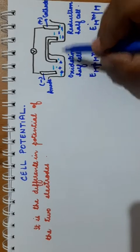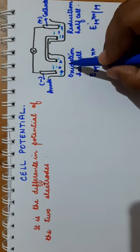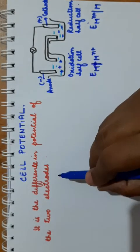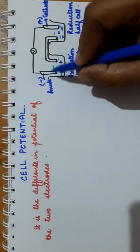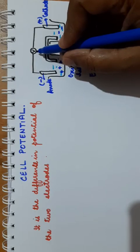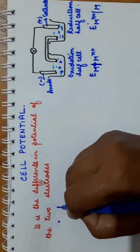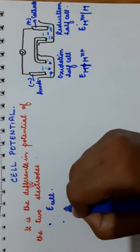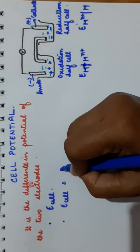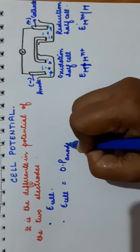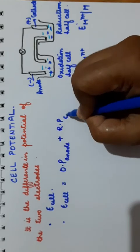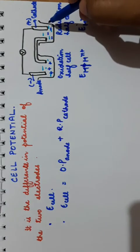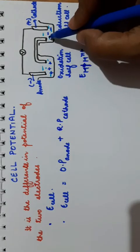The difference in the potential of the two electrodes or the two half cells is known as cell potential. It is the difference in potential of the two half cells, that is anode and cathode. It can be read by the voltmeter and it is represented by E cell. E cell is equal to oxidation potential of anode plus reduction potential of cathode, because here is oxidation potential and here is reduction potential, and you will get the sum of these as E cell.